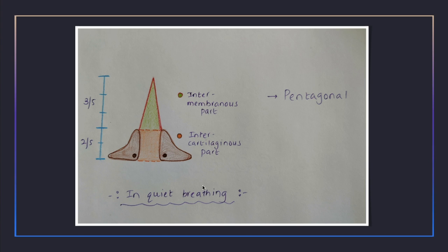During quiet breathing, the intermembranous part is triangular and the intercartilaginous part is rectangular, so the overall shape of the rima glottidis during quiet breathing is pentagonal. Muscles working on the arytenoid cartilages will rotate and glide them, and the shape will change from the normal pentagonal to something else as needed.